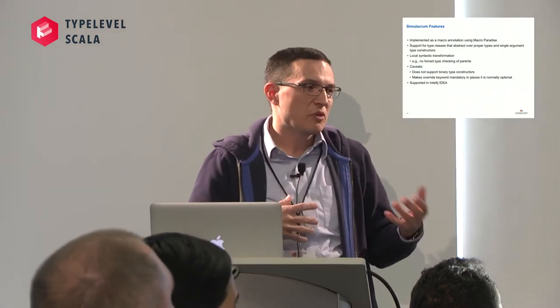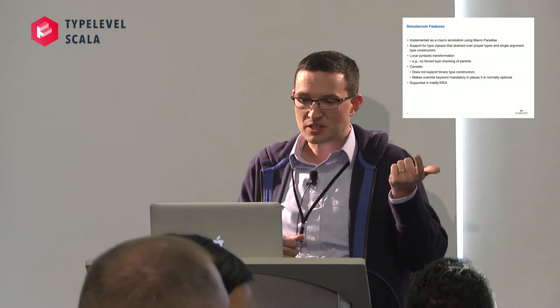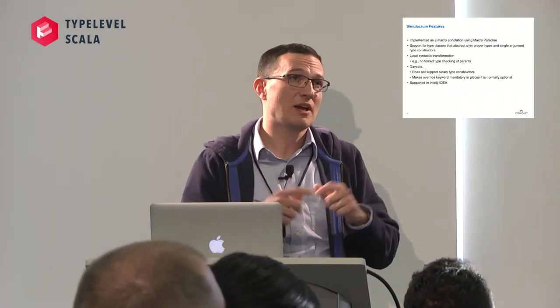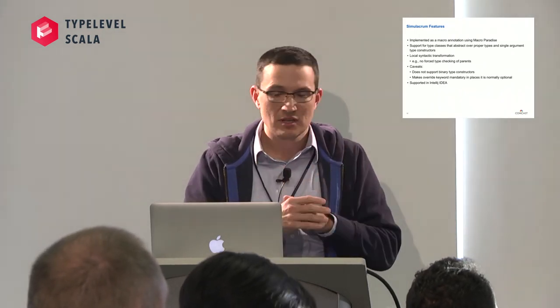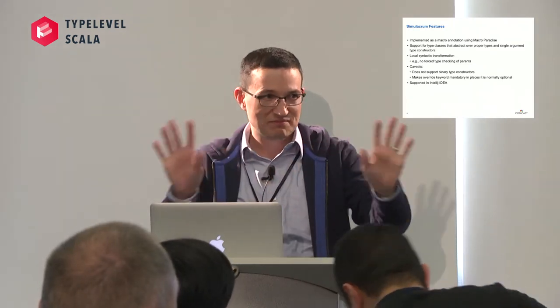Simulacrum — there's this law of working with macros that you feel really good when you start and think you can solve all these problems, and the more you work with macros the less confidence you have in your solution. Simulacrum is implemented with Macro Paradise as a macro annotation. Right now it supports working with type classes that abstract over proper types like Semigroup and Monoid, as well as unary type constructors like Monad, Applicative, and Functor. It does not support binary type constructors or other exotic shapes. I said to Paul Phillips once that I was overwhelmed trying to predict the work involved to make Simulacrum support binary type constructors, and he said 'you should be' — which kind of gave me permission to ignore it.